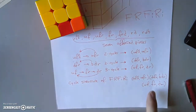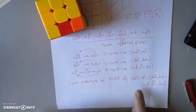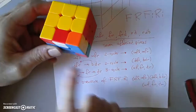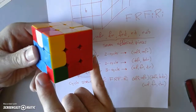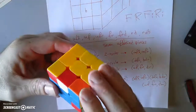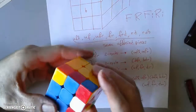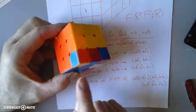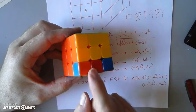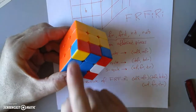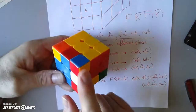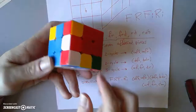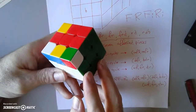This cycle structure tells us quite a bit. Every time I do this move, I'm swapping those corner pairs. If I do this move again, the corner pieces should have returned to their original locations — and they have. They're not twisted correctly, but the orange-blue-yellow piece is home, the blue-red-yellow piece is home, the red-white-blue piece is home, and the green-red-white piece is home.